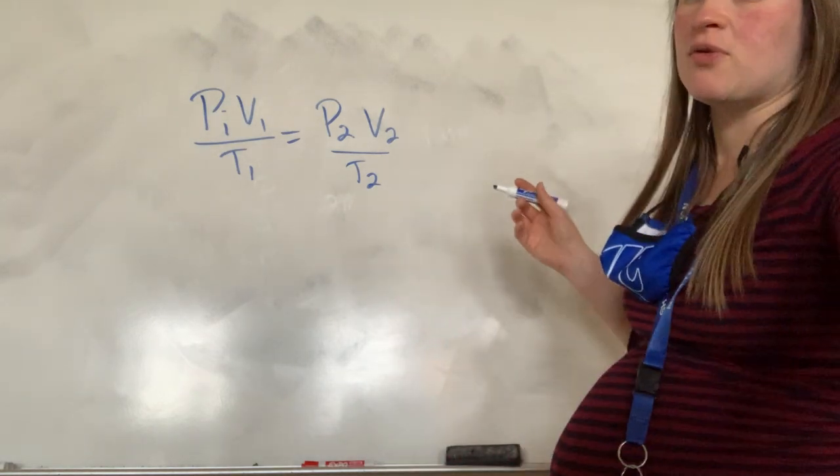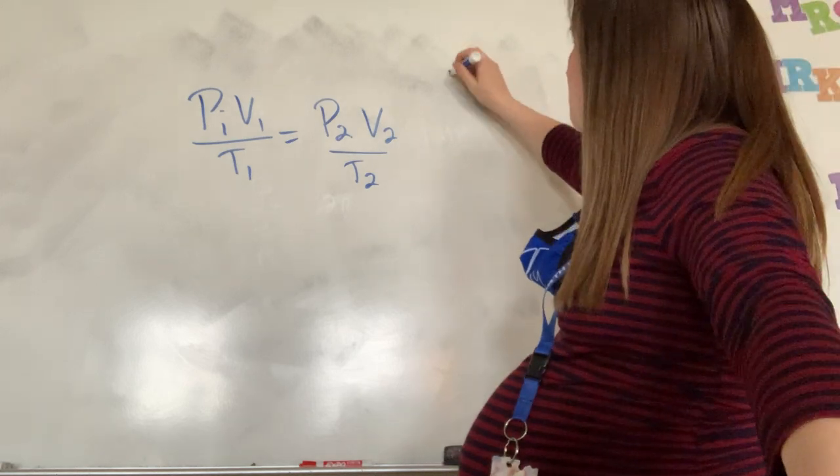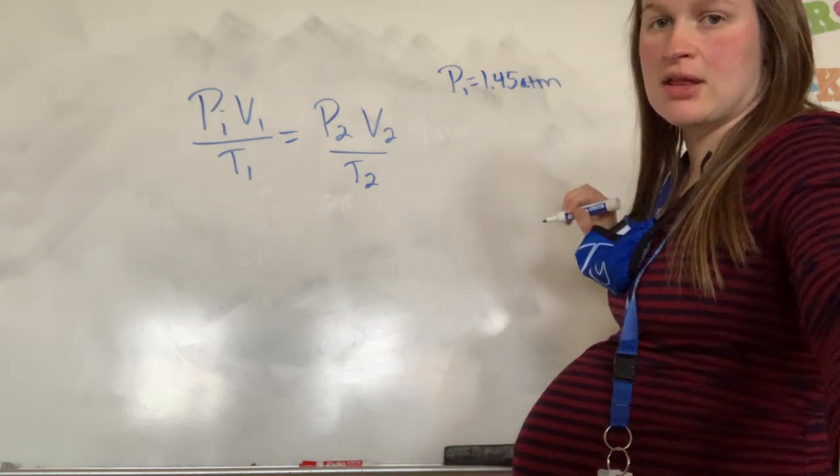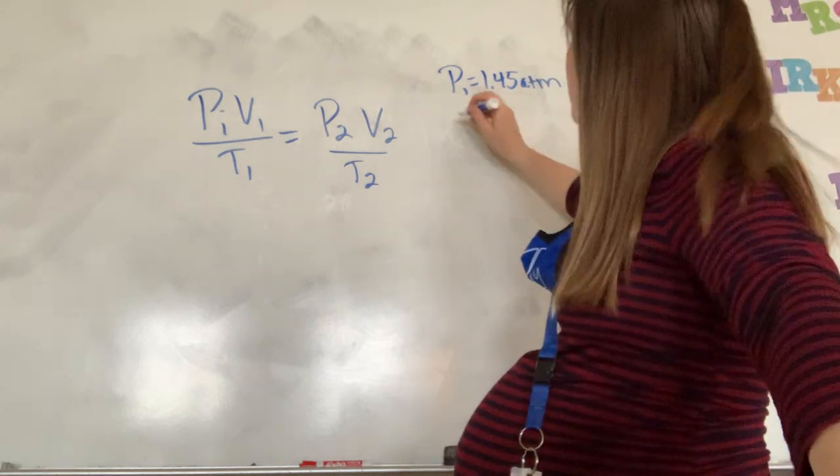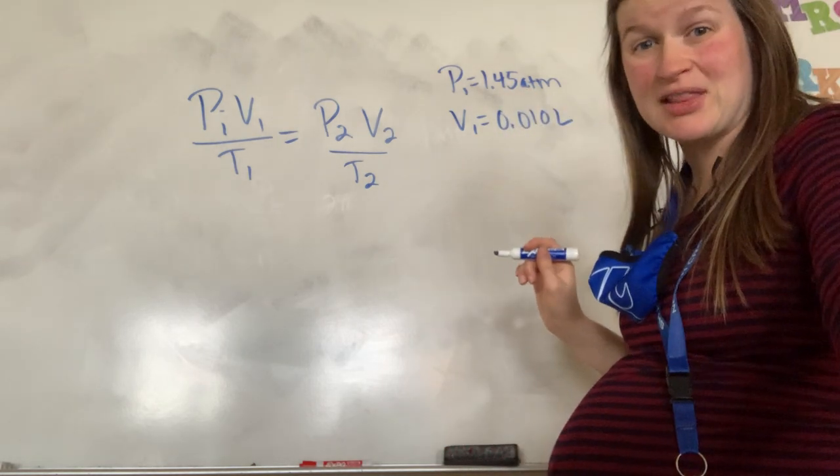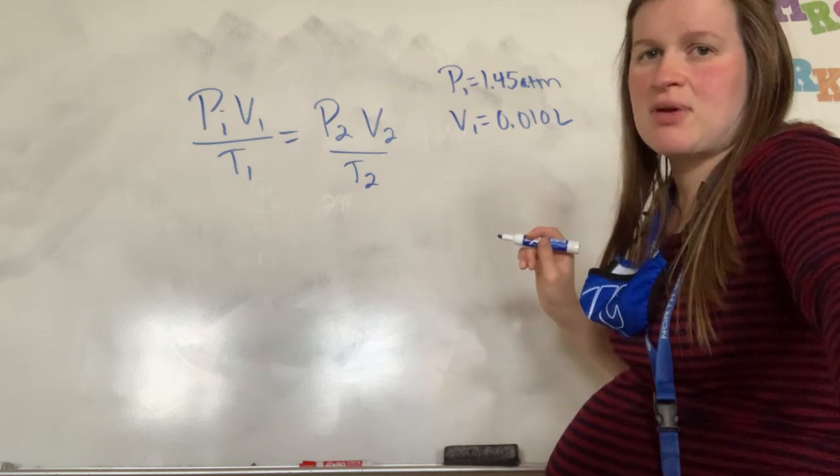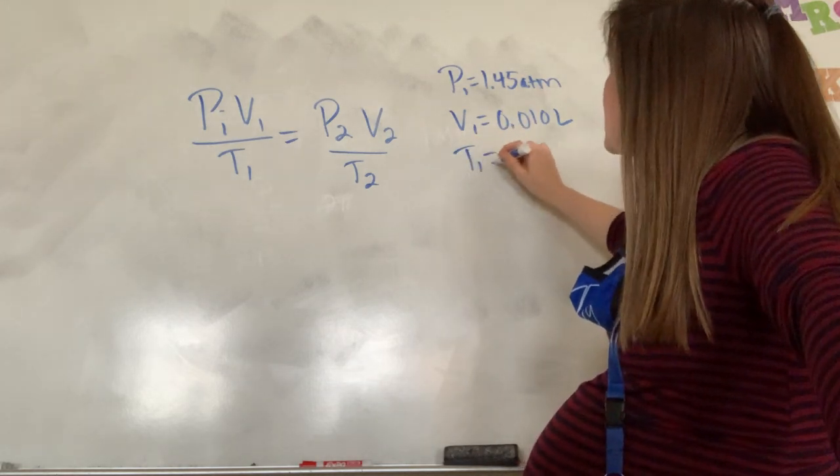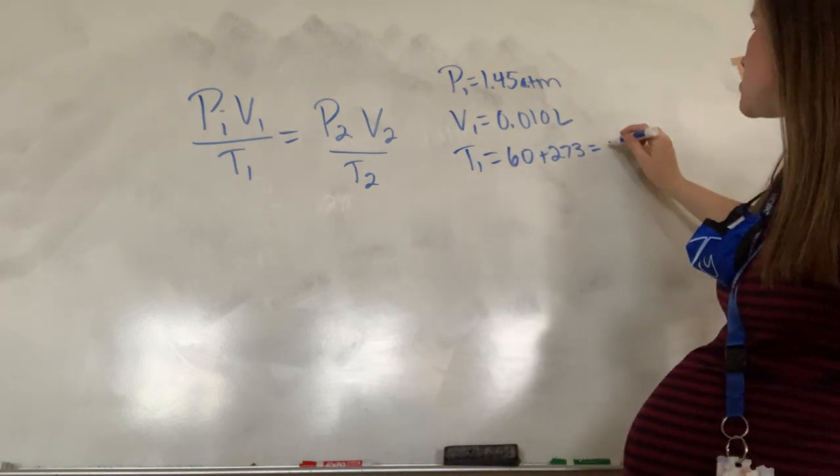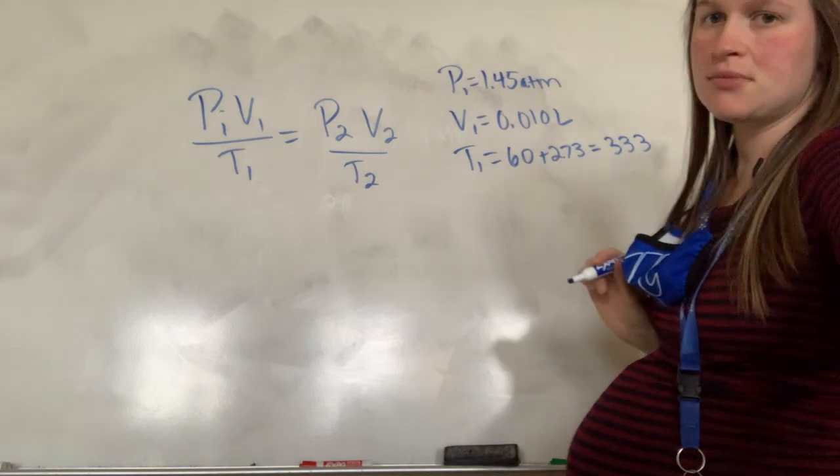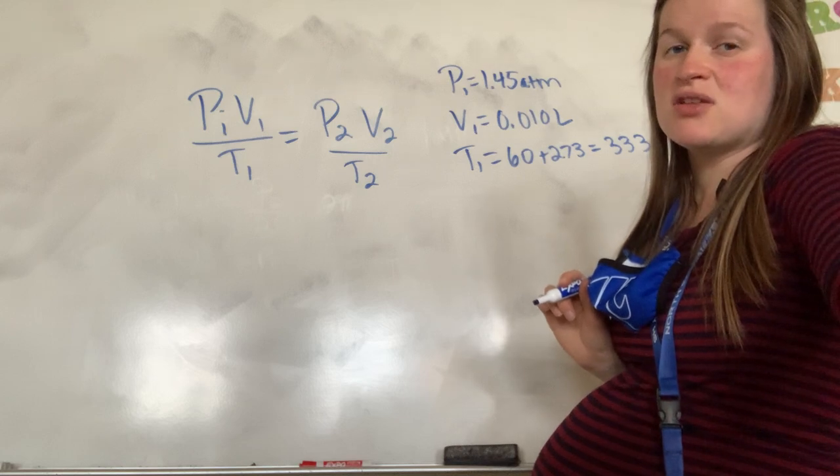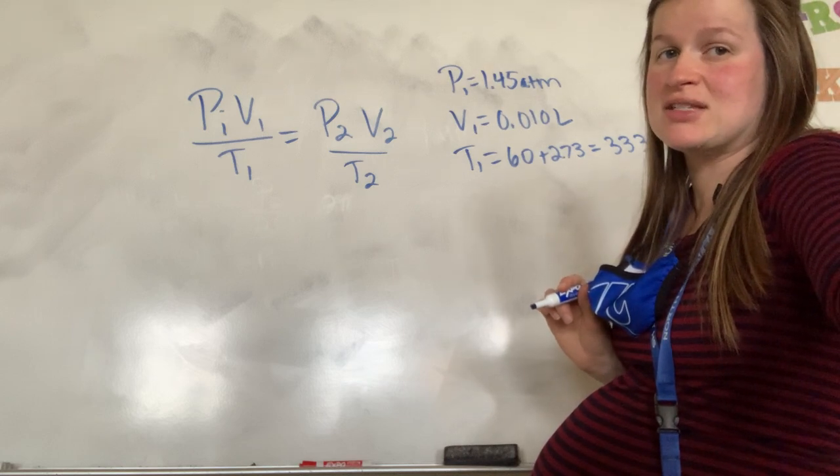So I'm going to plug those in. But first I'm going to list them off to the side for you. So we have our P1, which is at 1.45 atmospheres. And then we have our V1, which is 0.01 liters, because remember we want to be in liters. And then we have our temperature, which is going to be 60 plus 273, because we need to be in Kelvin. So that equals 333 for Kelvin. And then it says is to be corrected to the volume it would occupy at STP. What's the new volume? So I'm looking for V2.